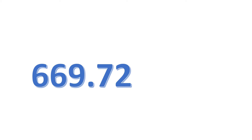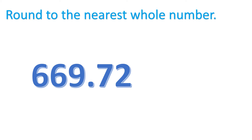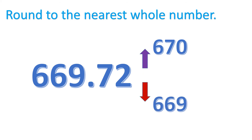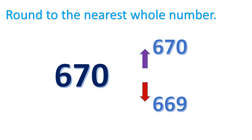Let's have another example: 669 and 72 hundredths. We are tasked to round this to the nearest whole number — so it's either it will go up to 670 or just retain to 669. Since the number at the right of the ones place is 7, which is more than 5, we are going to round up to 670.